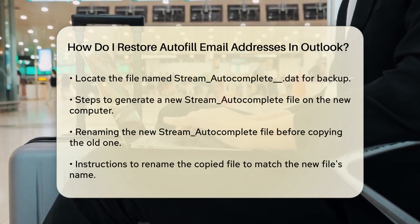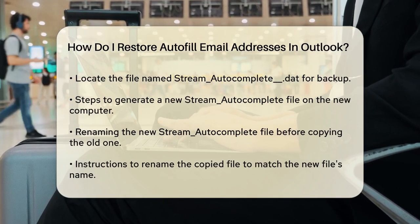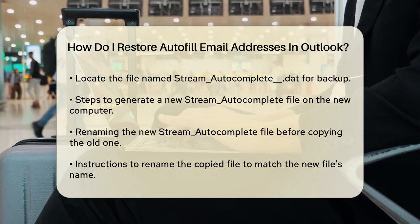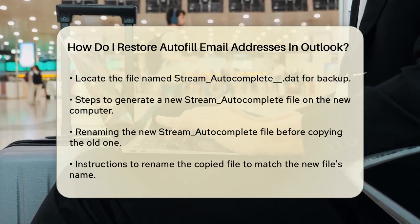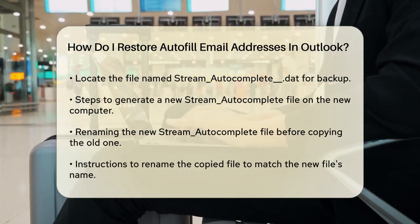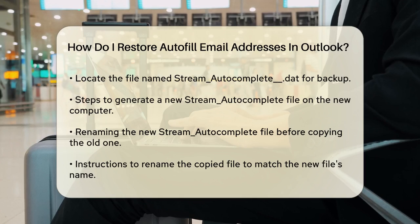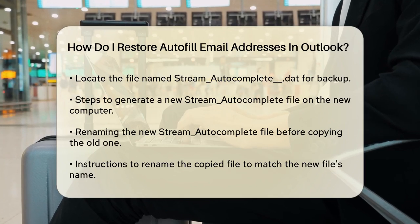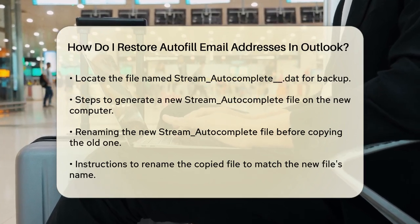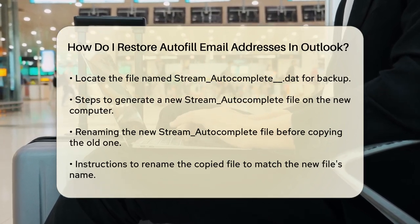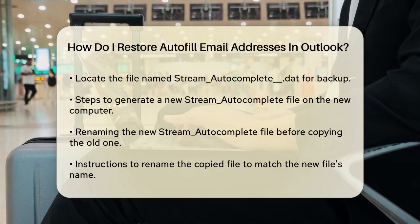Now, navigate to the C:\Users\[Username]\AppData\Local\Microsoft\Outlook\RoamCache directory. Here you'll find a file named streamautocomplete.dat. This is the file you need to backup from your old computer.